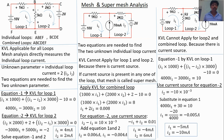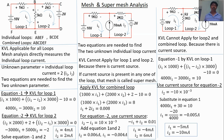In conclusion: for pure mesh (no current source), apply KVL for loop 1 and loop 2, simplify the equations, and get the answers. For supermesh (current source present), we cannot apply KVL for that loop — apply KVL for other loops, use the current source to form the remaining equation, simplify, and get the answers.